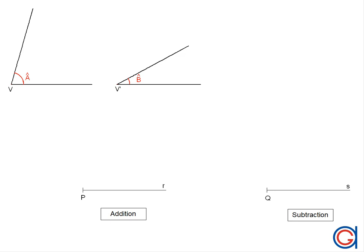Hello, today we are going to learn how to add and subtract angles using a compass. Here on the top of the screen we have two given angles A and B, and on the bottom of the screen we have two separate rays R and S. We are going to use ray R to add angles A and B, and we are going to use ray S to subtract angle B from angle A.